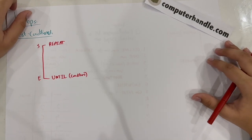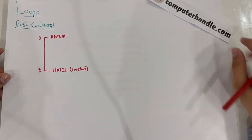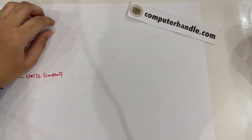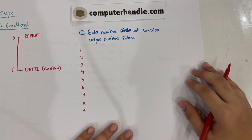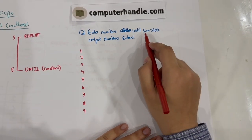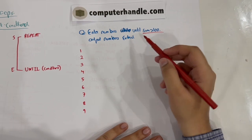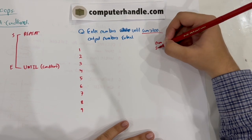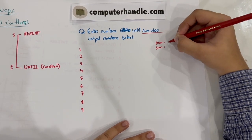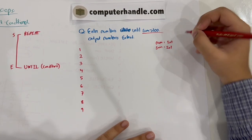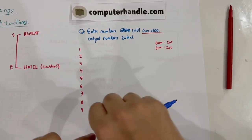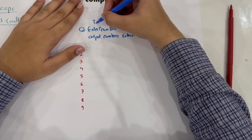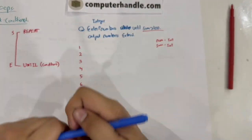Let's do an example question. Before we end the lecture I want to compare both loops, as that's probably the most important part of these two lectures. The question states: enter numbers until sum is greater than 100, then output the numbers entered. We're going to have two variables — let's declare num and sum as integer.